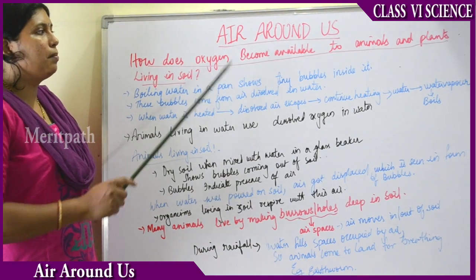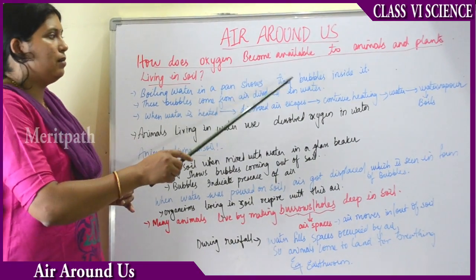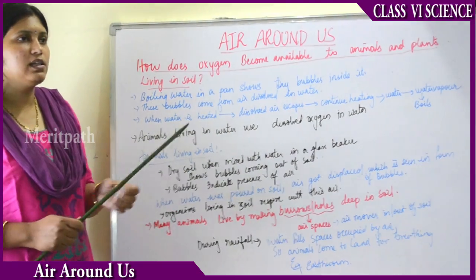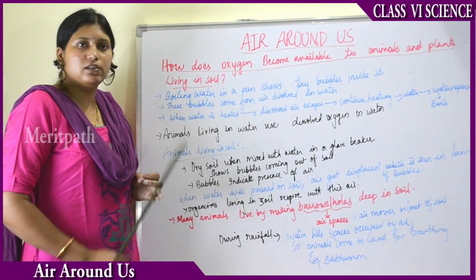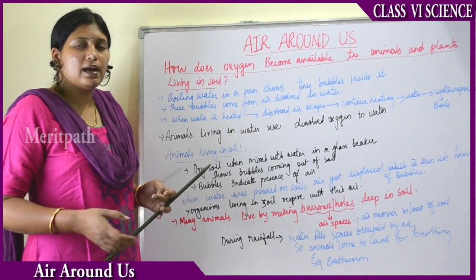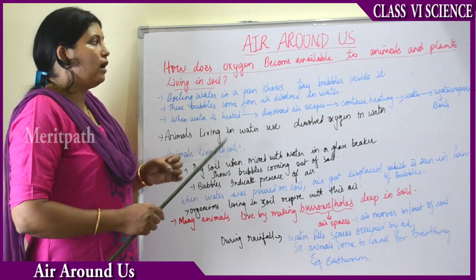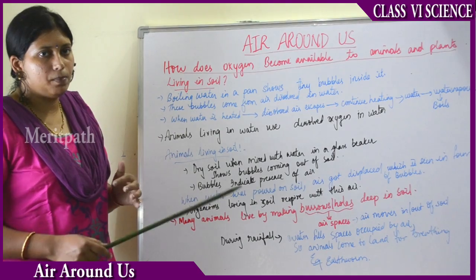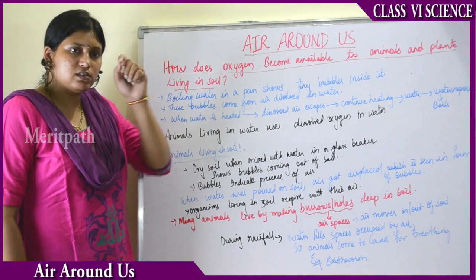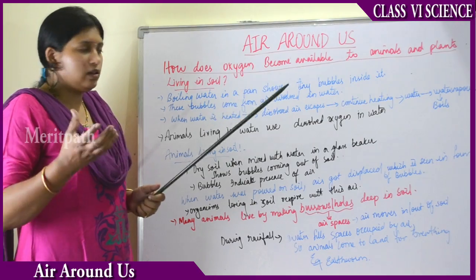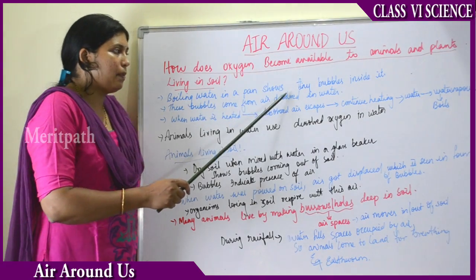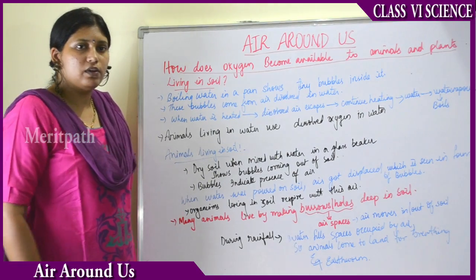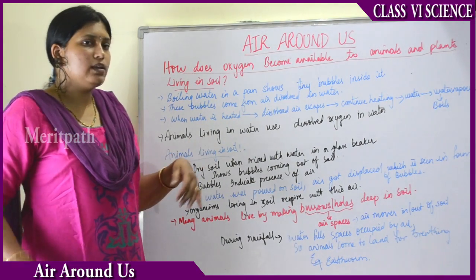How does oxygen become available to the animals and plants living in the soil or water? Consider boiling water in a pan — after boiling, we see small bubbles inside. These bubbles come from the air dissolved in the water, which proves that there is air dissolved in water.